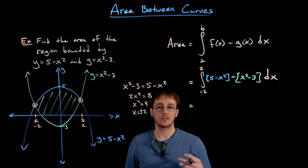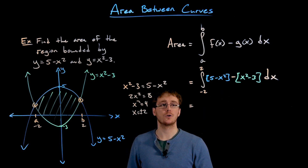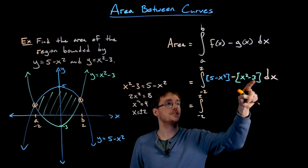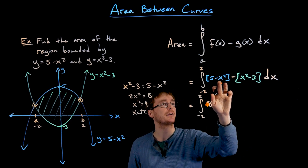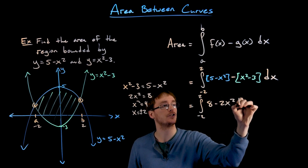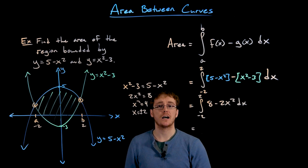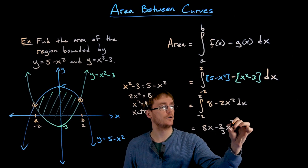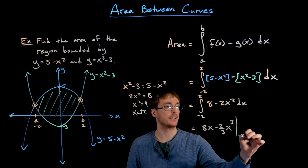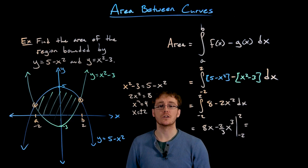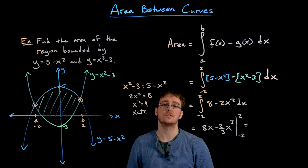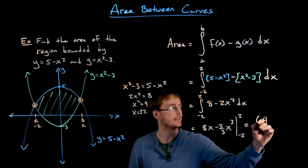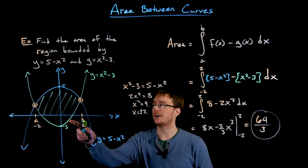Now that we've found those points of intersection, we can finish setting up our definite integral. The limits of integration go from x equals negative two to x equals positive two. Before finding any antiderivatives, we combine like terms: five minus negative three gives eight, and negative x squared minus x squared gives negative 2x squared. Using the power rule, the antiderivative of 8 is 8x and the antiderivative of negative 2x squared is negative two-thirds x cubed. We evaluate at the upper and lower limits using the Fundamental Theorem of Calculus, and the result is exactly 64 thirds as the area between our two curves.